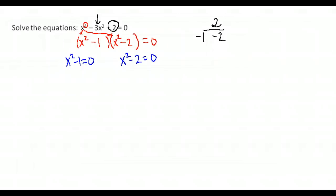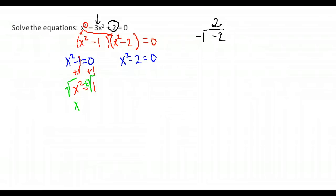We have x squared minus 1 equals 0 and x squared minus 2 equals 0. For the first one, add 1 to both sides to get x squared equals 1. To get rid of the squared, we take the square root of both sides — always put plus or minus. So x equals plus or minus the square root of 1, which is 1. That gives two answers.